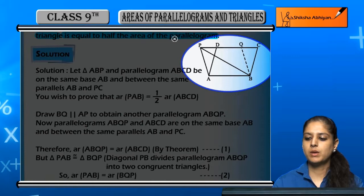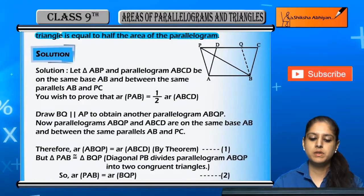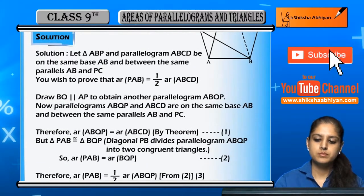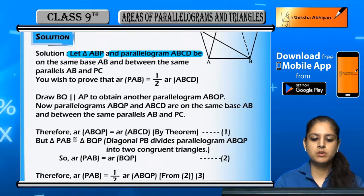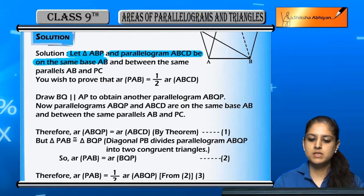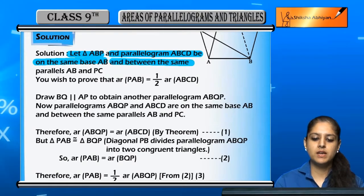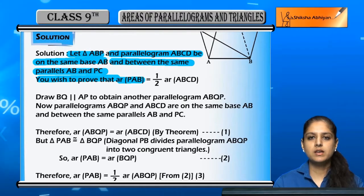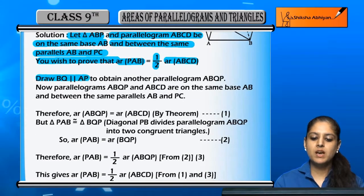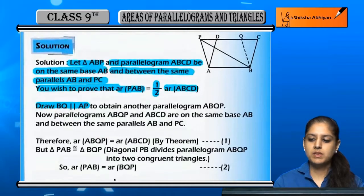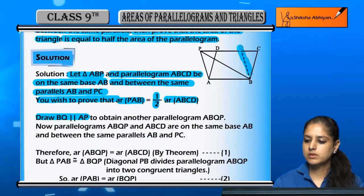Let triangle ABP and parallelogram ABCD be on the same base AB and between the same parallel lines AB and PC. We need to prove that the area of triangle ABP is half the area of parallelogram ABCD. We draw line BQ to construct parallelogram ABQP.